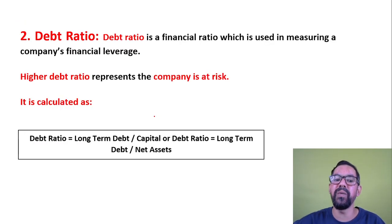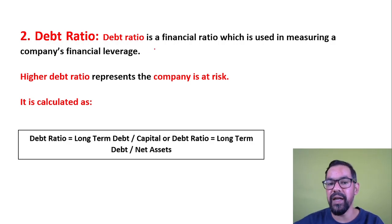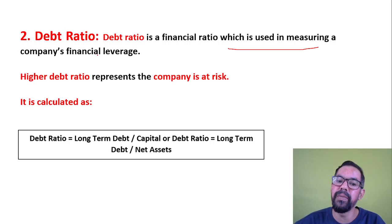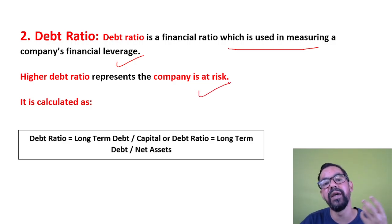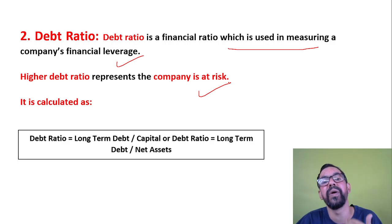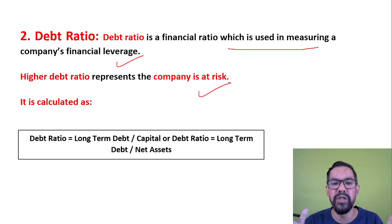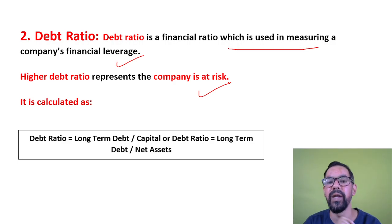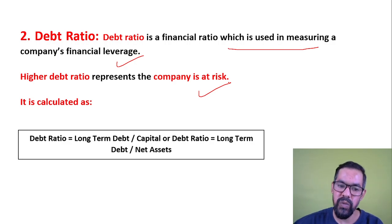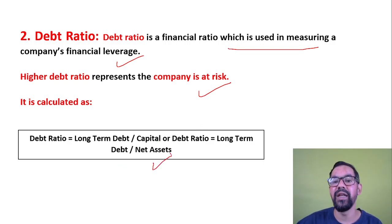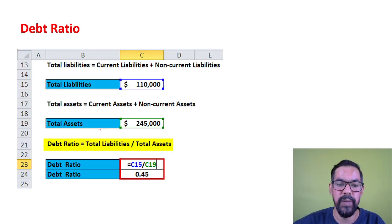Next we have the debt ratio. Here you are calculating the long-term debt of an organization. Debt ratio is a financial ratio used to measure a company's financial liabilities. Higher the debt ratio means the company is at higher risk — if you have more debt in your portfolio, there is high risk because you have to pay interest in the long term and the future is uncertain. So having debt at a higher level makes a negative impact on your organization. Debt ratio equals long-term debt divided by capital, or total liabilities divided by net assets.